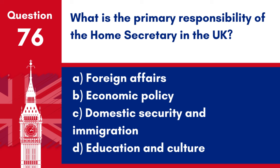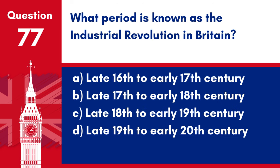Question 76. What is the primary responsibility of the Home Secretary in the UK? a. Foreign affairs. b. Economic policy. c. Domestic security and immigration. d. Education and culture. Answer: c. Domestic security and immigration. The Home Secretary oversees domestic security, policing, and immigration matters within the UK.